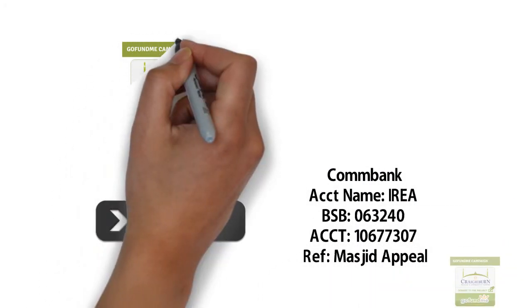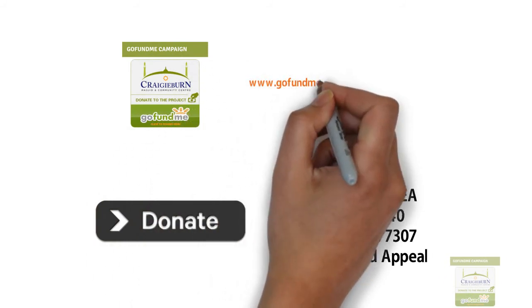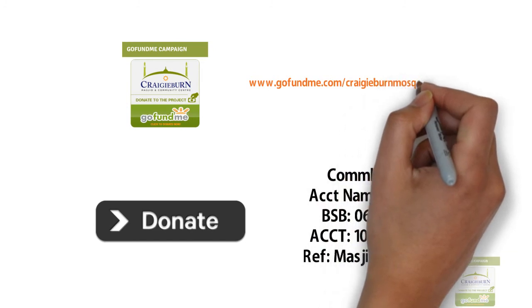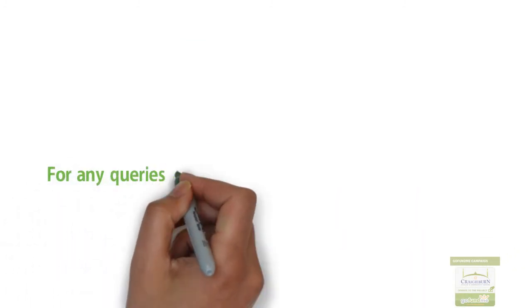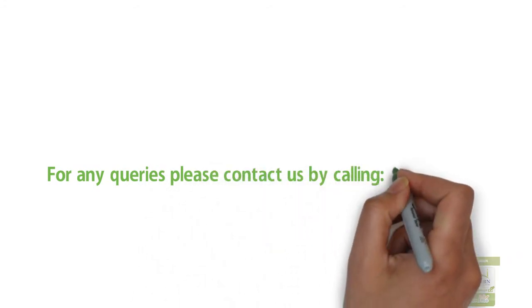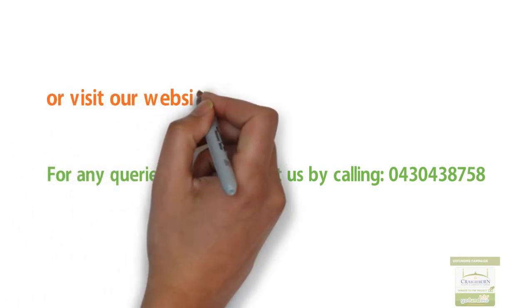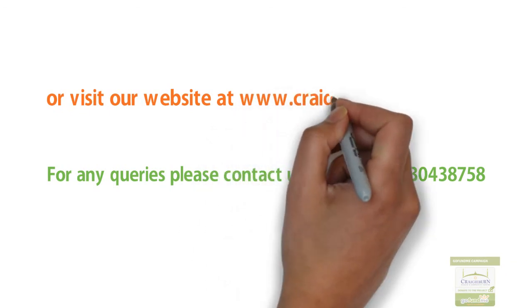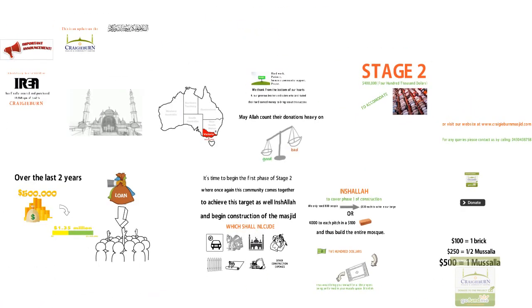or online through our crowdfunding appeal at www.gofundme.com/CraigieByrne-Mosque. For any queries, please contact us by calling 0430 438 758 or visit our website at www.ireaonline.org.